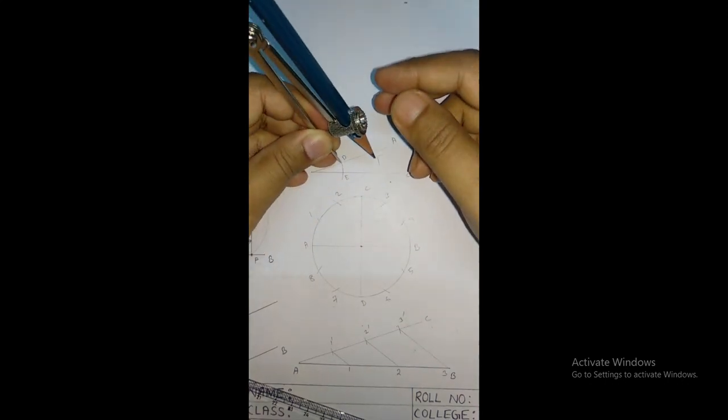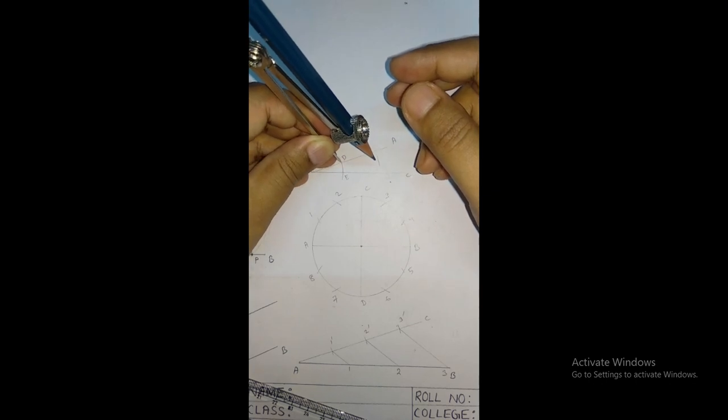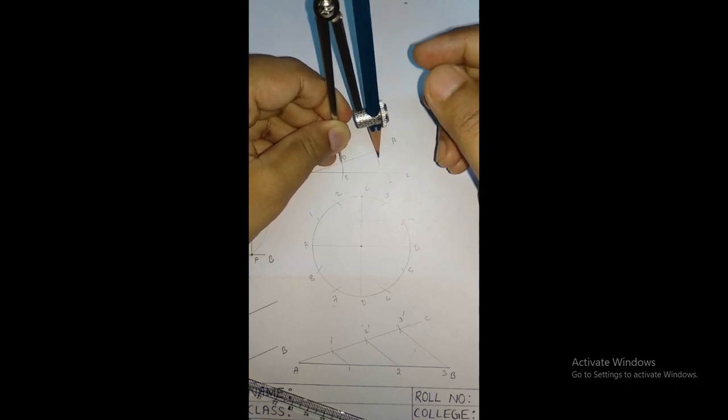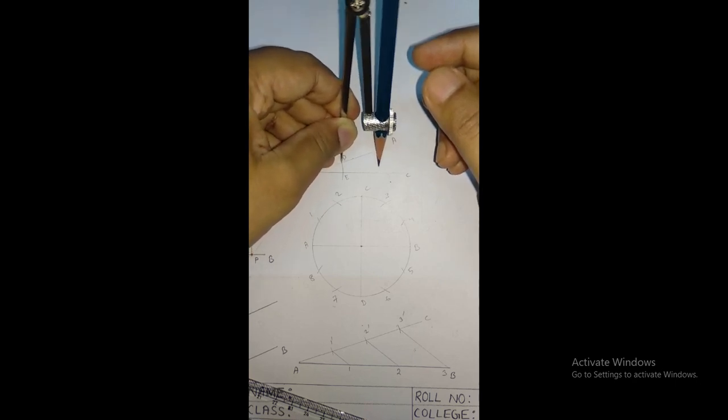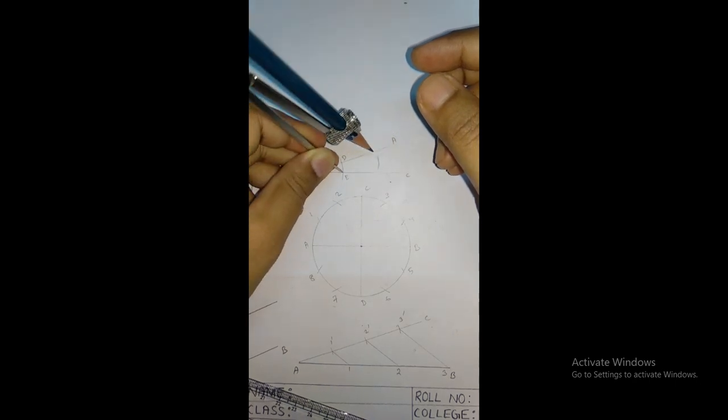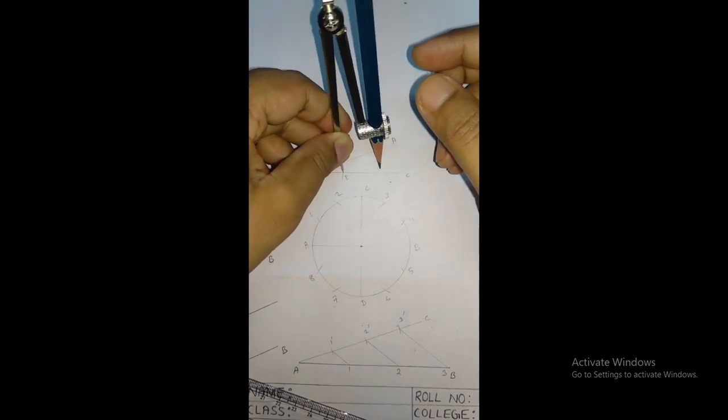In between these two angles, and similarly, you have to draw an arc over here. So this is the arc, and this is the arc.